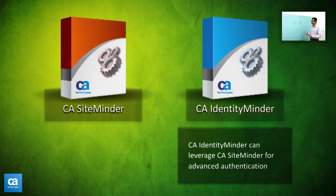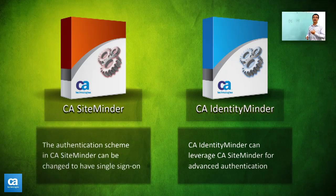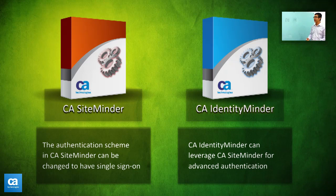Identity Minder by itself only supports username and password — it doesn't have SiteMinder capabilities. So by integrating with SiteMinder, we're able to change the authentication scheme to be certificate-based, to be token-based, and so on, and to have single sign-on with other applications.